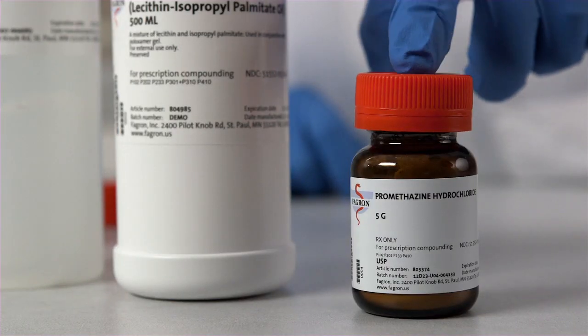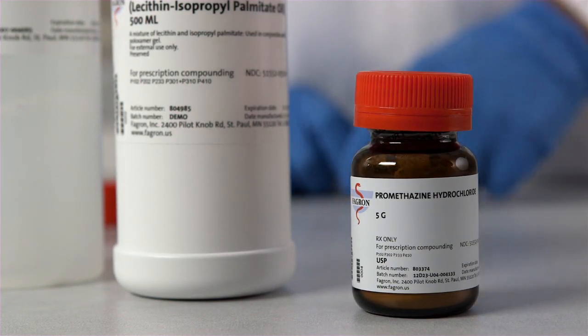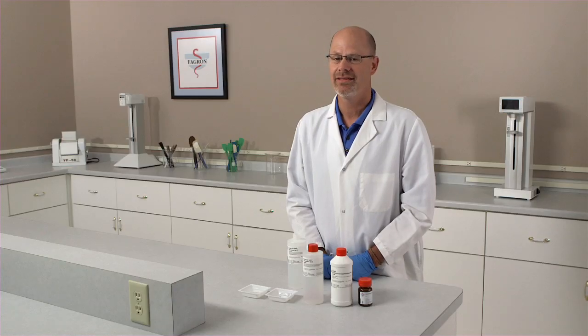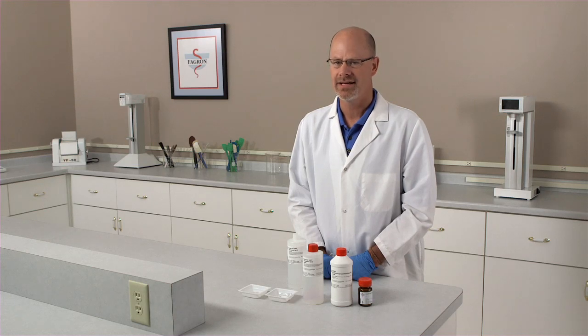The last ingredient will be our active. In this case, we're using promethazine hydrochloride. The first step is to calculate the quantity of ingredients needed in your formulation. Then you can begin the weighing process.